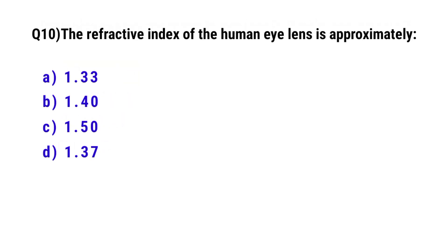Question No. 10: The refractive index of the human eye lens is approximately. The correct option is B: 1.40.